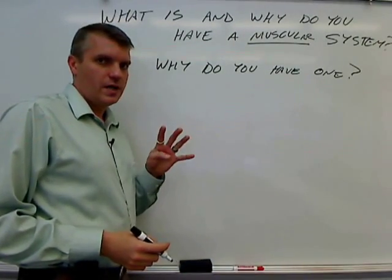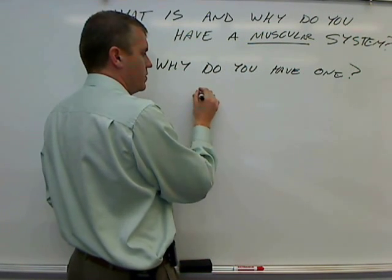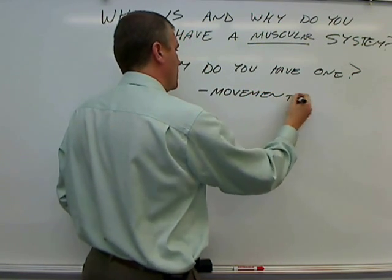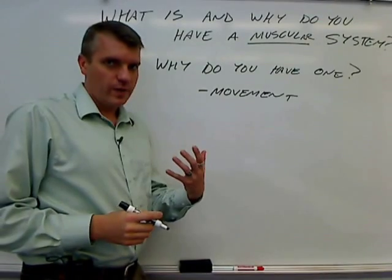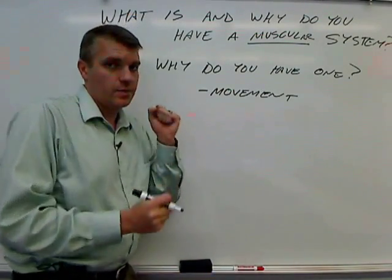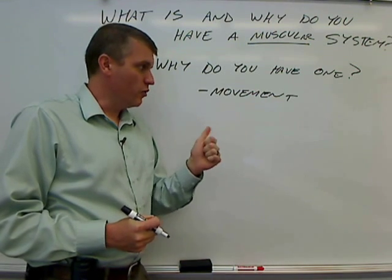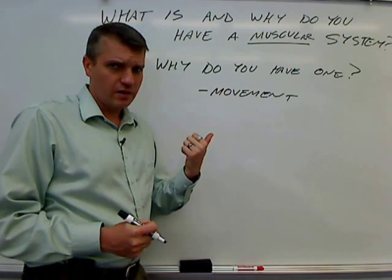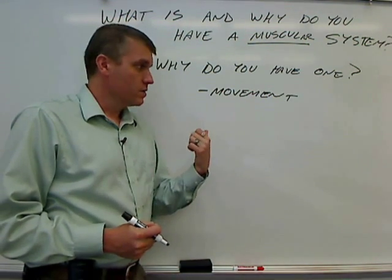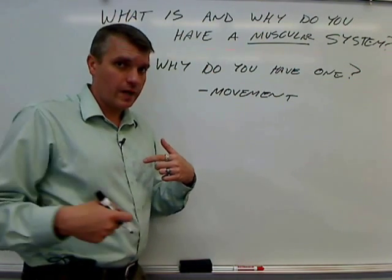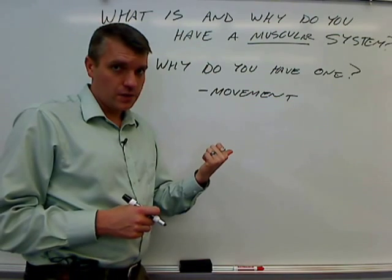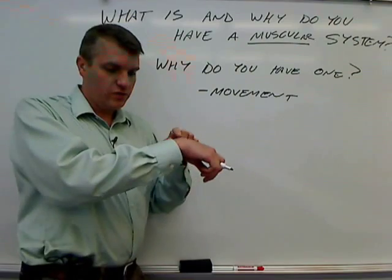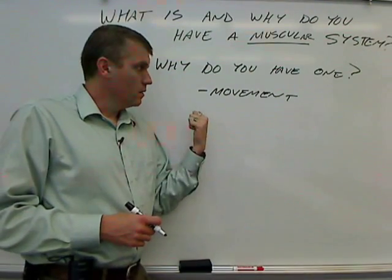There are four major reasons to have a muscular system. The first one is movement — outward locomotive movement like the moving of my arms and legs when I walk, but also the movement of substances inside the body. Cardiac muscle's job is to pump the blood, so without that muscle you wouldn't get blood moving around the body. Smooth muscle also moves the food along the digestive tract and moves the hairs on your skin to be erect.